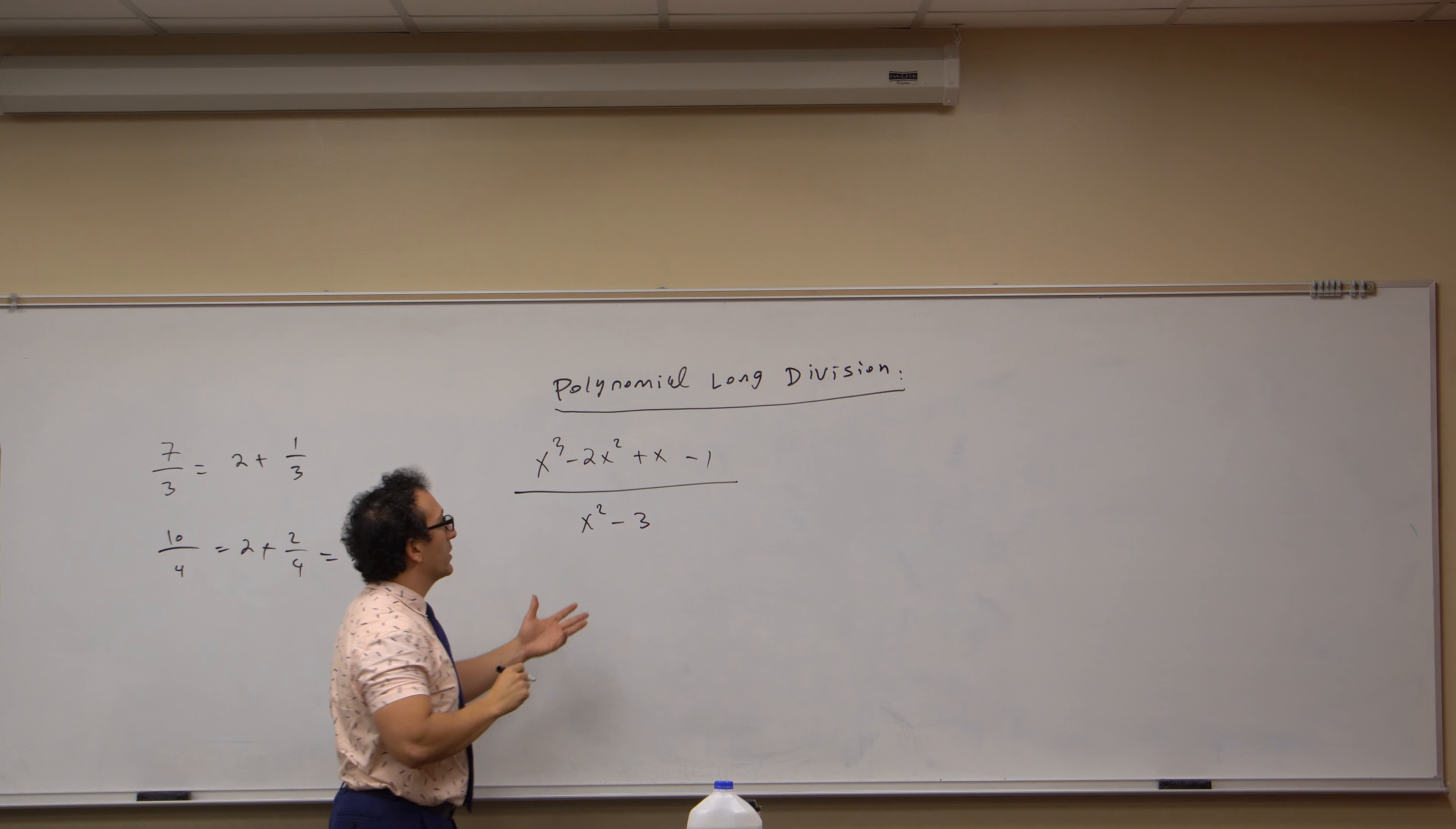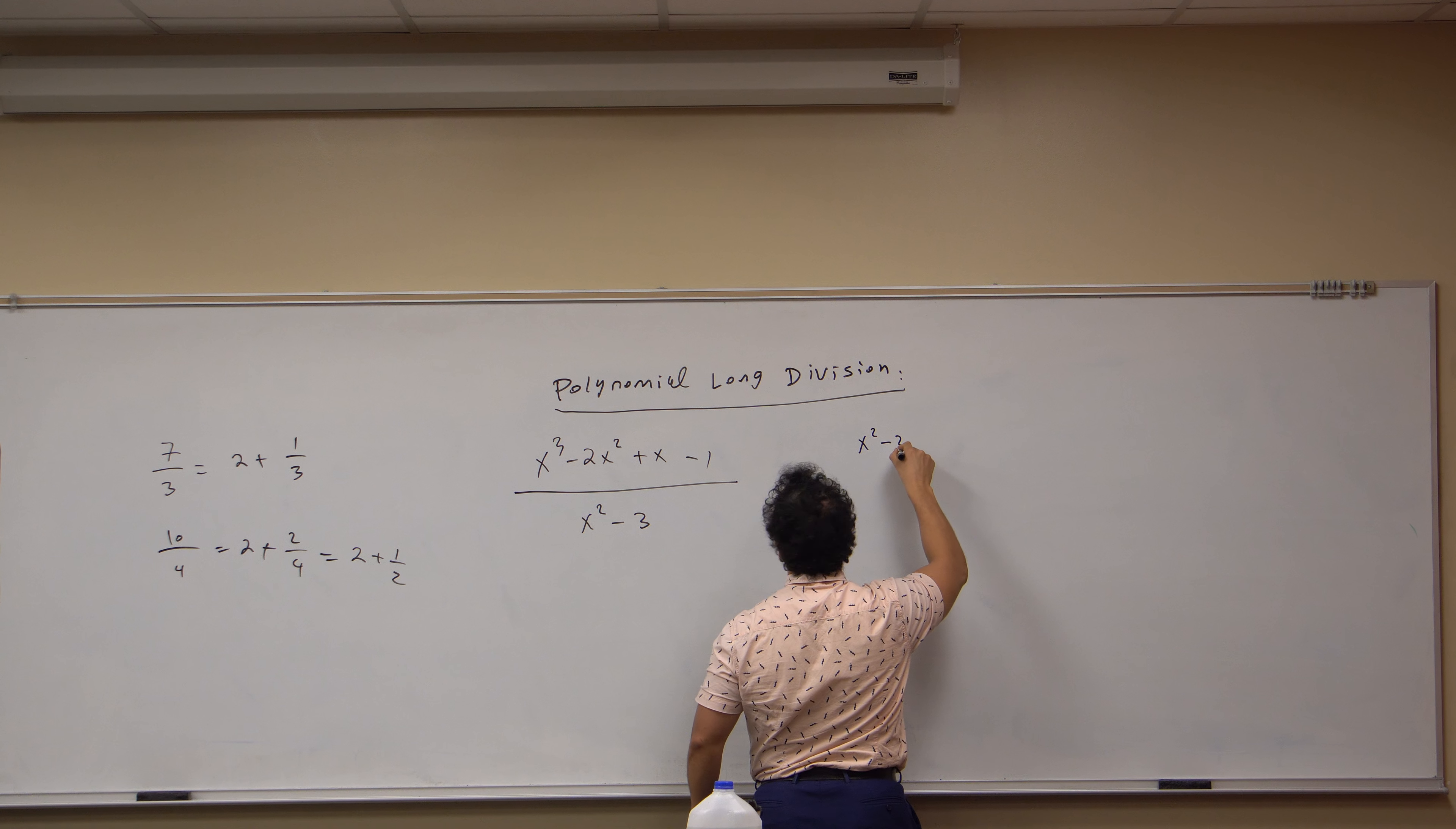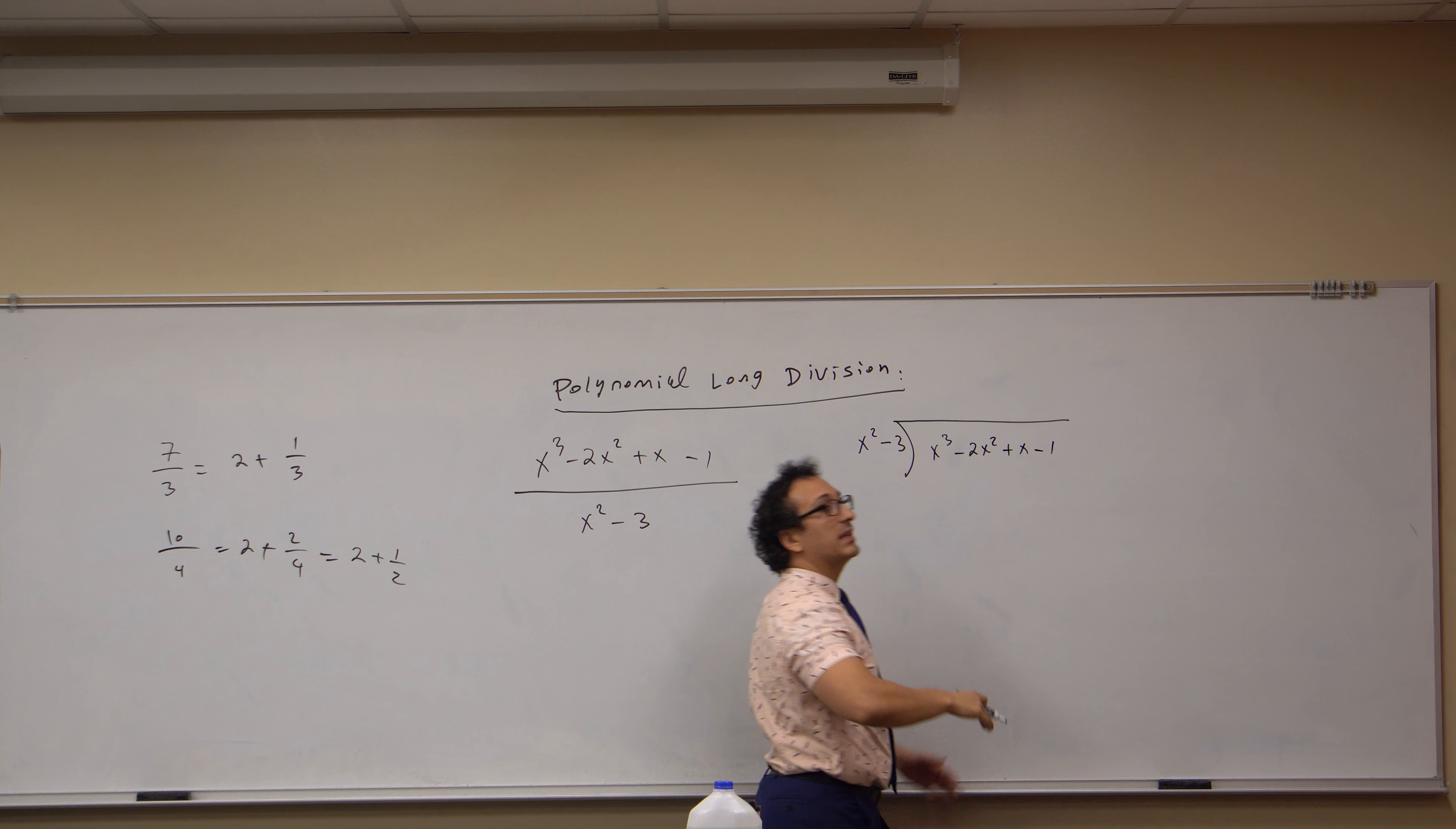How are we going to divide these two polynomials? Well, the way we've been taught is to set it up like this: put the x squared minus three outside of this mathematical device, put the numerator up top, and begin the algorithm.